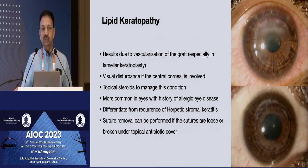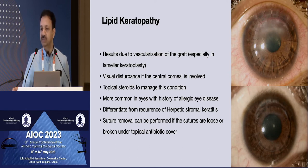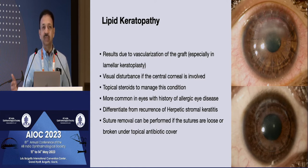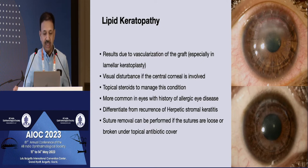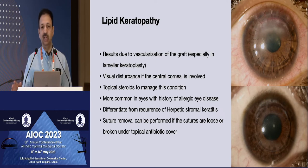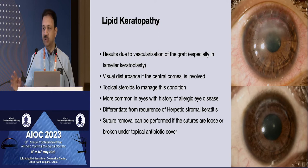Long-term, leaving behind sutures — even if the patient has good vision and is not bothered — can result in blood vessels coming into the cornea. Especially if lamellar grafts have been done, blood vessels can go into the interface, which is easy access, and can result in lipid keratopathy. Often patients only present when the lipid keratopathy starts involving the visual axis. We can treat with steroids and remove the offending sutures, but sometimes it leads to loss of graft clarity. You also need to differentiate this from recurrence of herpetic stromal keratitis, where the clinical appearance may be quite similar.